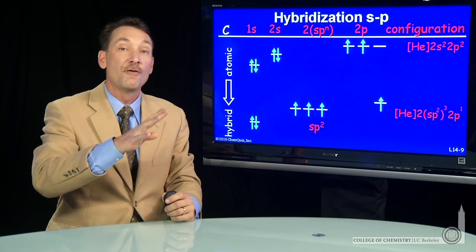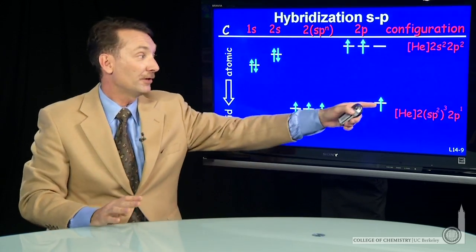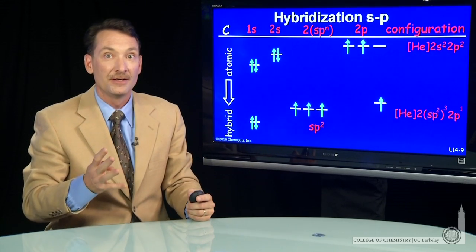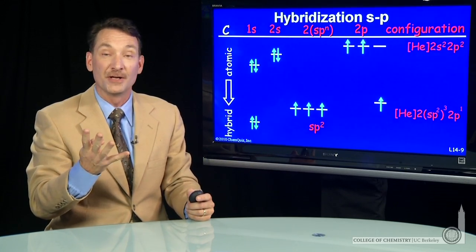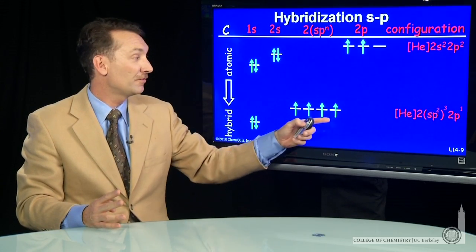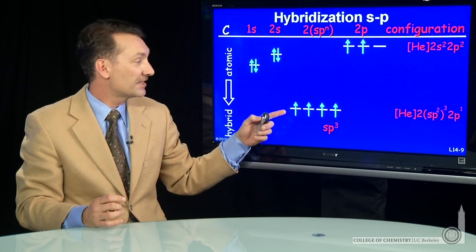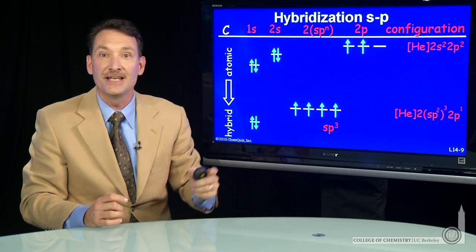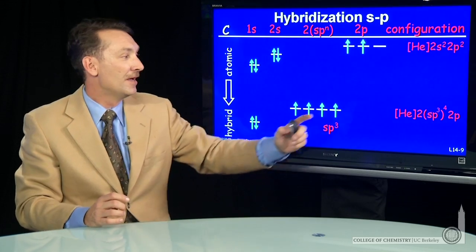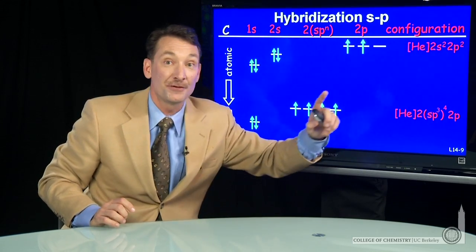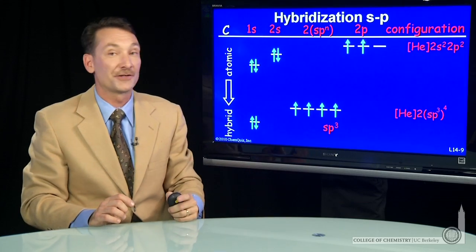If I combine that fourth orbital to form sp3 hybrids, four equivalent orbitals now because they're formed from an s and three p's, my four equivalent sp3 orbitals will contain all four of the former s and p electrons from carbon. So the electronic configuration is sp3 with four electrons.